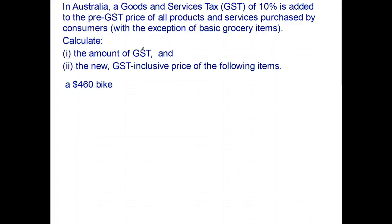It's fairly straightforward. We'll do part one. The amount of the GST is just 10% of $460. That comes out to be—dividing by 10, move the decimal point one place—that's going to be $46 is the GST.